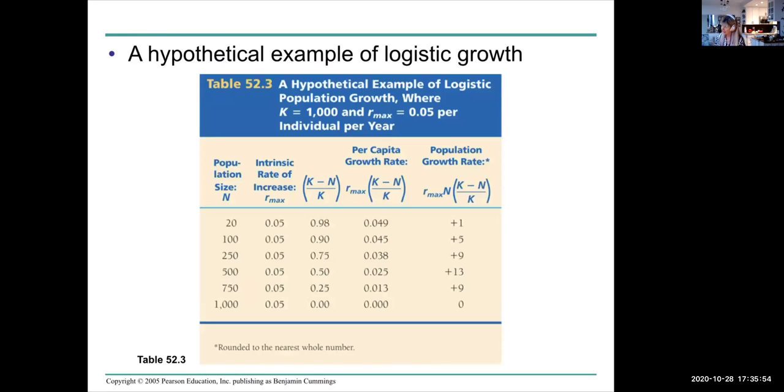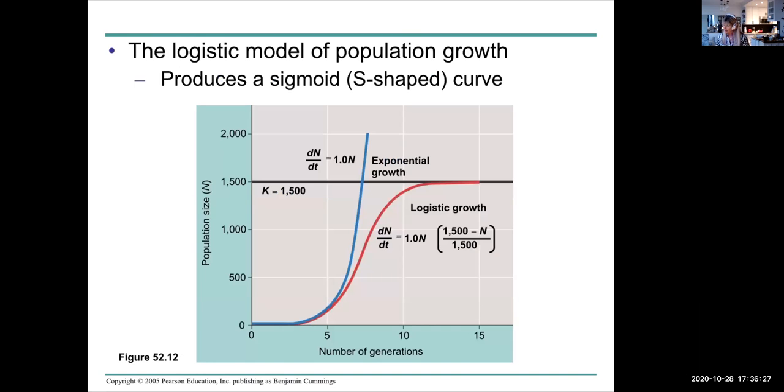A hypothetical example of logistic growth. Our max here is 0.05 per individual per year. You can start with a population size of 20, you include the intrinsic rate of increase, you calculate your qualifying equation, and you get your per capita increase and population growth rate.